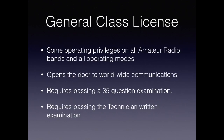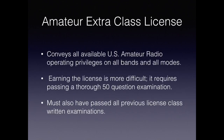Once you pass your technician license, you're eligible to go for your general class license. The general class license has operating privileges on all amateur bands and allows all operating modes. It opens the doors to the wide world of communications and also requires passing a 35-question examination — and first passing the technician written examination. With the extra class license, you get all the privileges available for amateur radio — all bands and all modes. Earning the license is much more difficult, requiring a thorough 50-question examination, and you must have also passed the general and technician licenses.